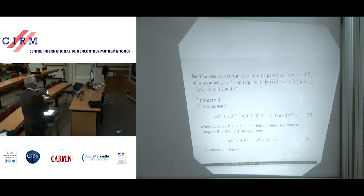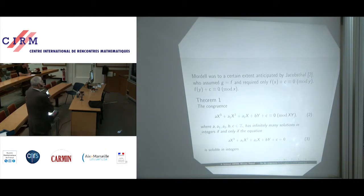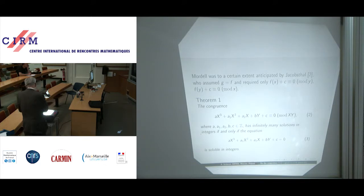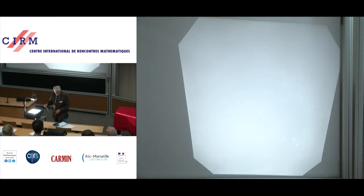So we have the following on this subject. Theorem 1: the congruence AX cubed plus A1 X squared plus A2 X plus BY plus C congruent to 0 mod XY — and this contradicts in this particular case Mordell's statement completely.